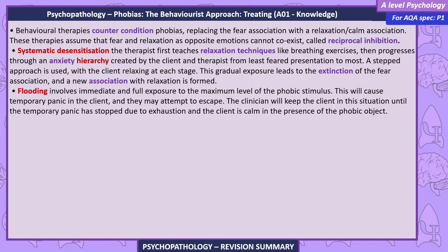Treating. Behavioral therapies counter-condition phobias, replacing the fear association with a relaxation-calm association. These therapies assume that fear and relaxation as opposite emotions cannot coexist — called reciprocal inhibition. Systematic desensitization: the therapist teaches relaxation techniques like breathing exercises, then progresses through an anxiety hierarchy created by the client and therapist from least to most feared. A stepped approach is used, with the client relaxing at each stage, gradually leading to extinction of the fear association and a new association with relaxation. Flooding involves immediate and full exposure to the maximum level of the phobic stimulus, causing temporary panic; the clinician keeps the client in this situation until panic stops due to exhaustion and the client is calm in the presence of the phobic object.